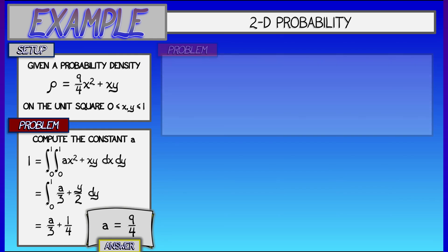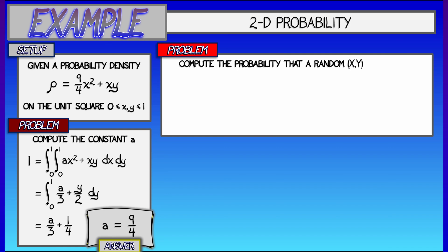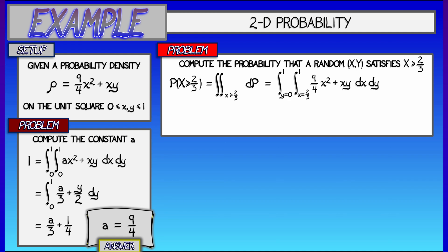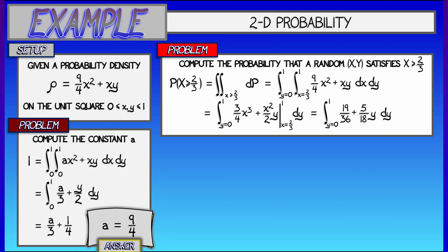Something a little more doable and kind of fun is to ask questions about probability. Let's say you pick a point with coordinates X and Y on the square at random with respect to this density. What are the odds that the X coordinate is bigger than 2 thirds? All I have to do is integrate the probability element — that is, rho — over the subset where X is bigger than or equal to 2 thirds. Y is unconstrained, so Y goes from 0 to 1 and X goes from 2 thirds to 1. Integrating with respect to X gives 3 quarters X cubed plus X squared Y over 2. Evaluating as X goes from 2 thirds to 1 gives 19 thirty-sixths plus 5 eighteenths Y. Integrating that as Y goes from 0 to 1, you get 2 thirds.